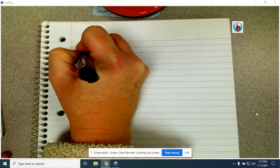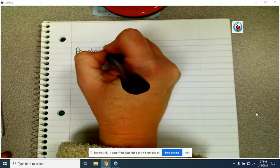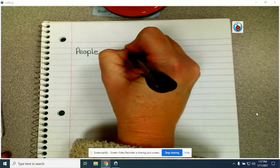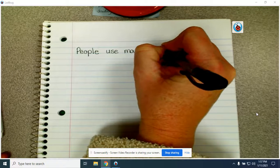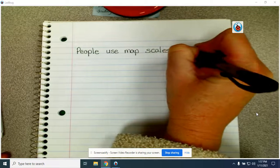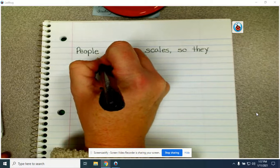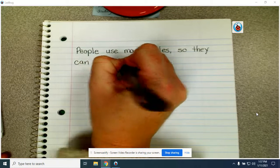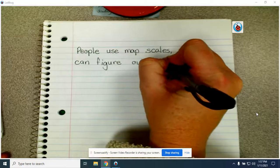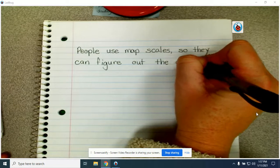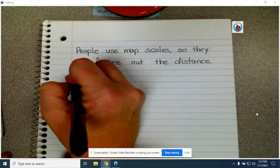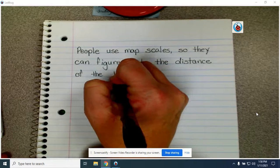Why do people use map scales? People use map scales so they can figure out the distance of the trails in the park. So our sentence today is going to be, people use map scales so they can figure out the distance of the trails in the park.